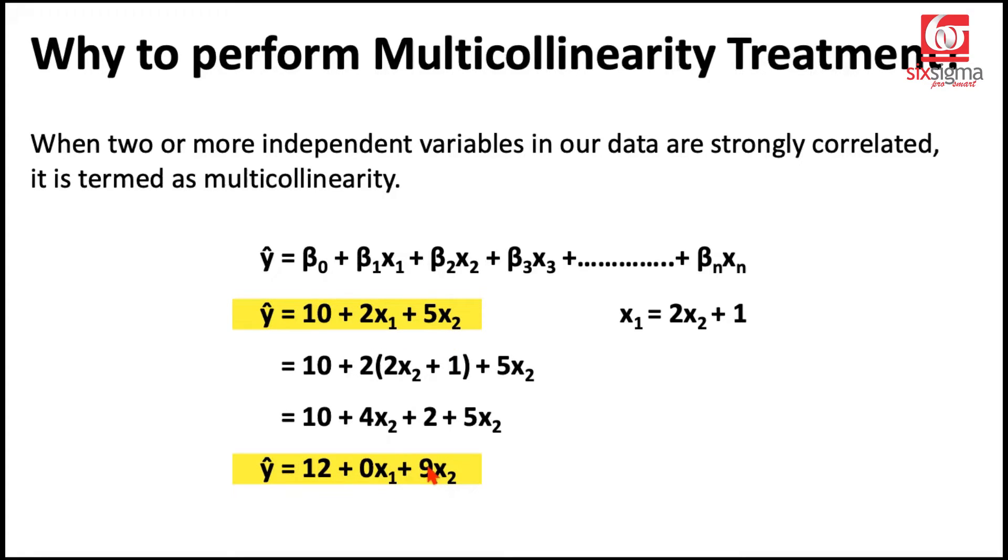Is this equation wrong? Not really. Given the fact that x₁ and x₂ have a correlation, and they are linearly associated, we derive this equation. Now the confusion is, is 10 the constant or 12 the constant? Is the coefficient of x₁ 2 or is it 0? Is the coefficient of x₂ 5 or is it 9? That's where there is confusion. And this confusion would further increase if we now try to put x₂ here in terms of x₁.